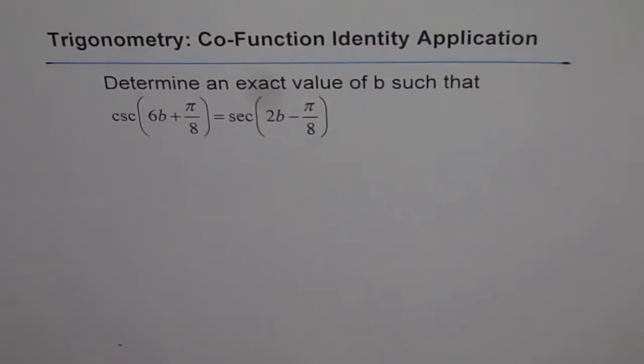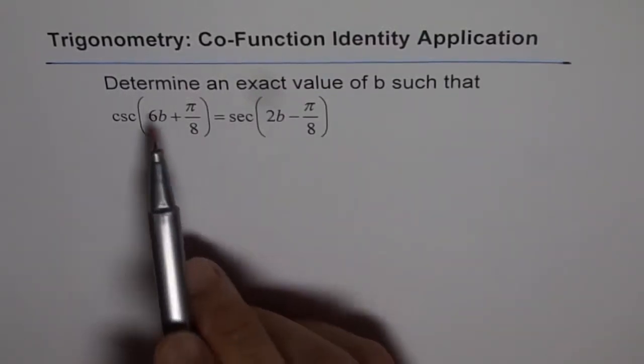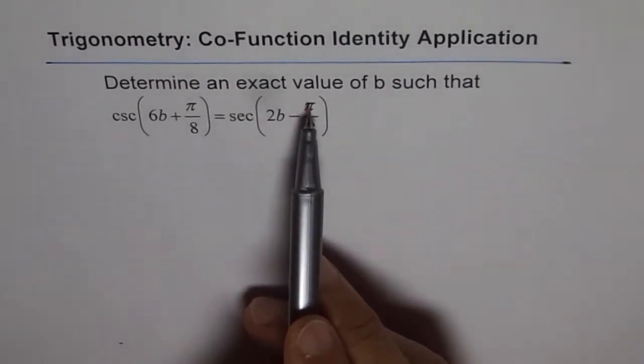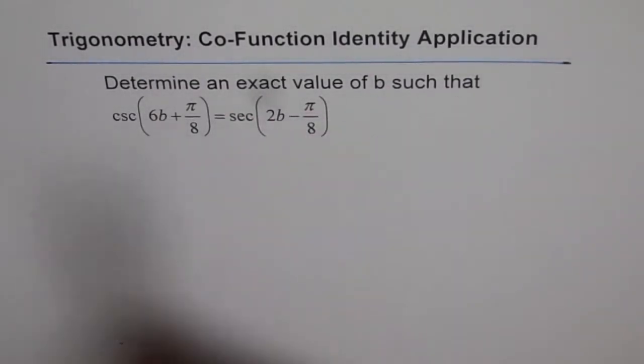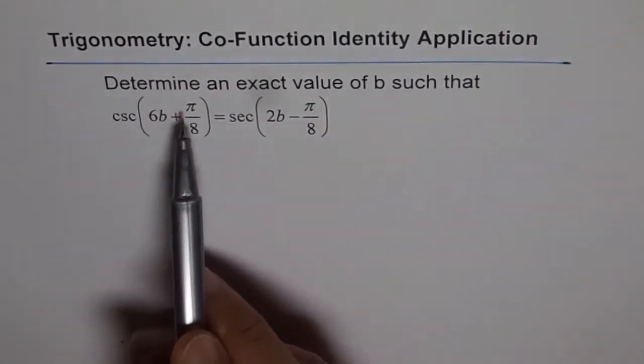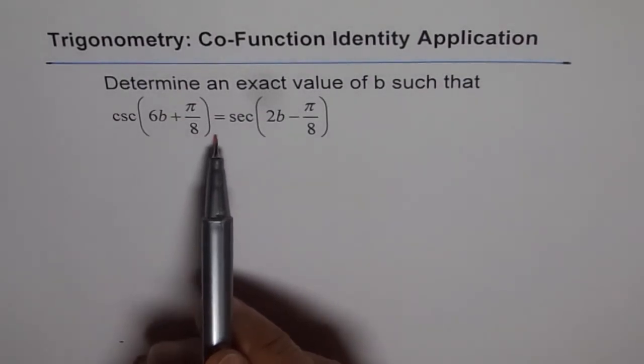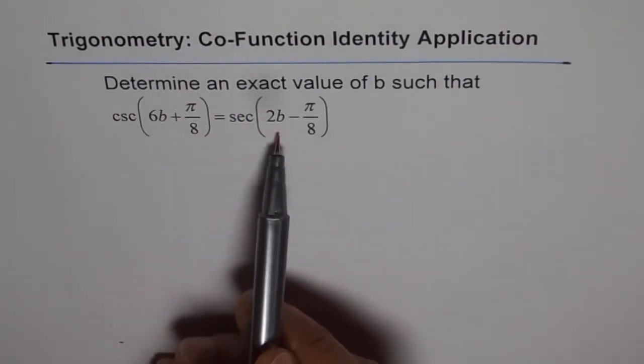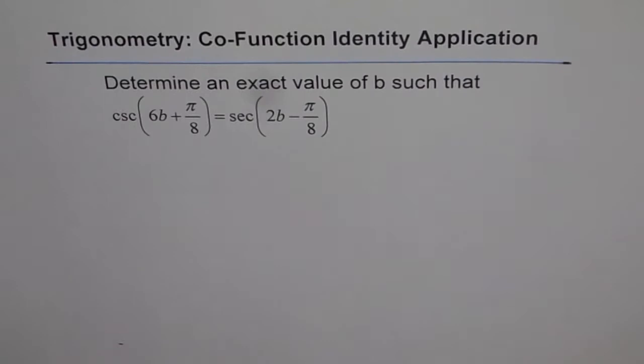Co-function identity application. Determine an exact value of b such that cosecant of 6b plus π over 8 equals secant of 2b minus π over 8. This is an application of co-function identity. Let's first try to understand what is co-function identity.